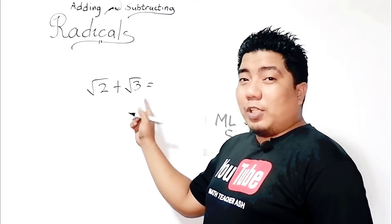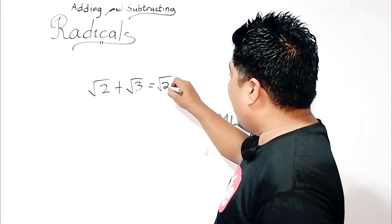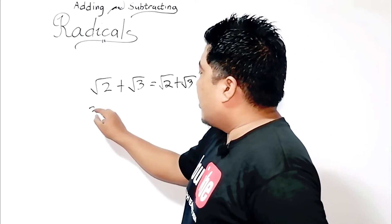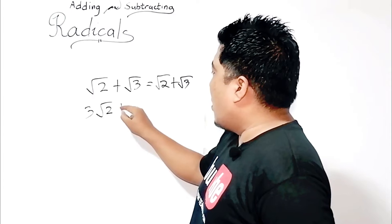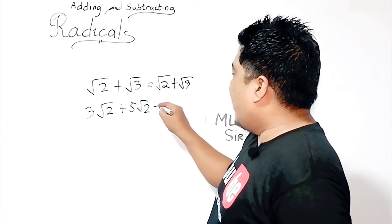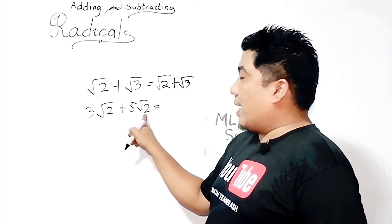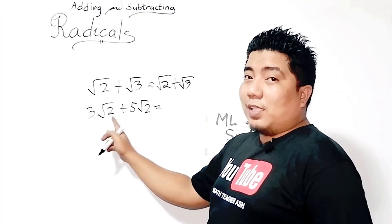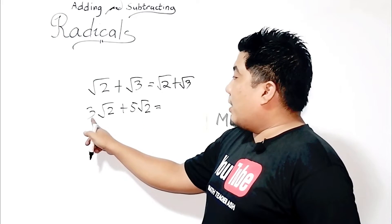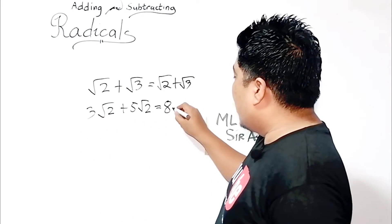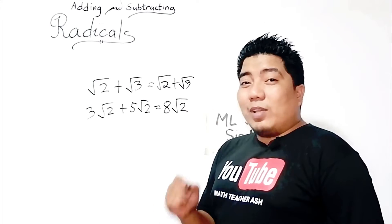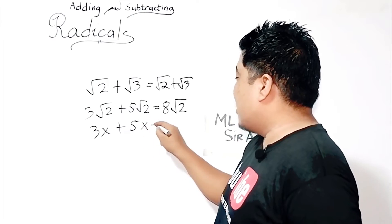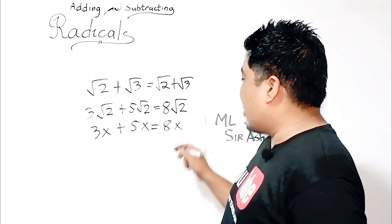If you want to get the result, you just copy your given problem. However, if you have three square root of two plus five square root of two, then this has the same radicand. What you need to do is just add the coefficients of these radical expressions, which are three and five. So you will have eight square root of two. This is familiar as the case 3x plus 5x — they are just the same: 8x.